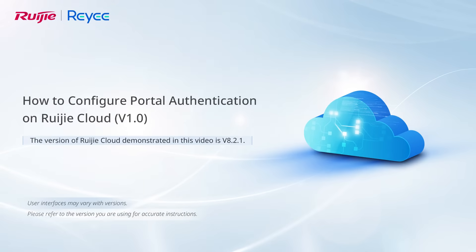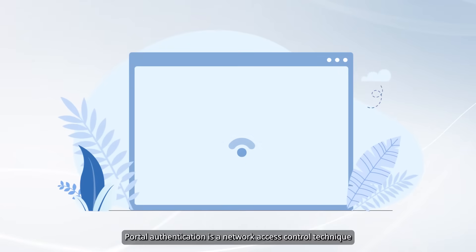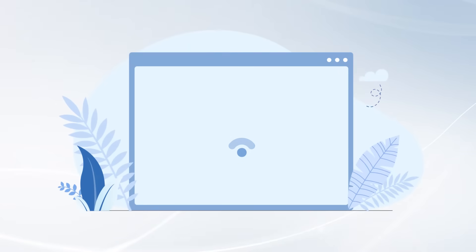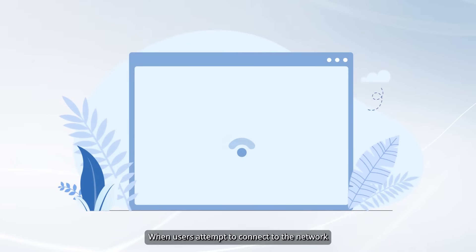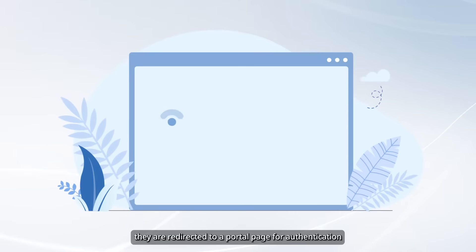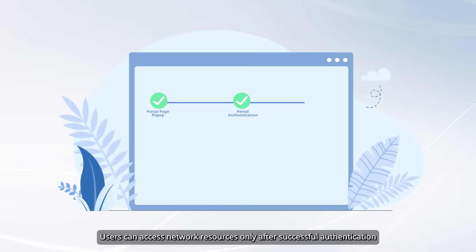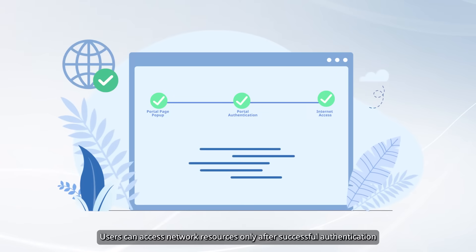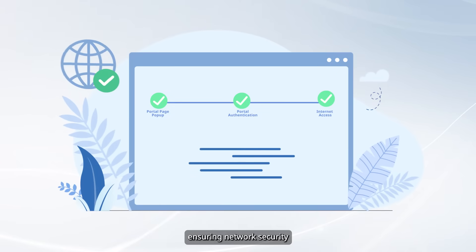This video demonstrates how to configure portal authentication on Wegea Cloud. Portal authentication is a network access control technique. When users attempt to connect to the network, they are redirected to a portal page for authentication. Users can access network resources only after successful authentication, ensuring network security.